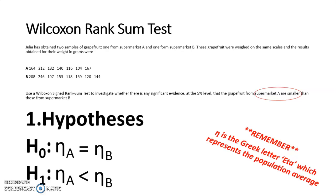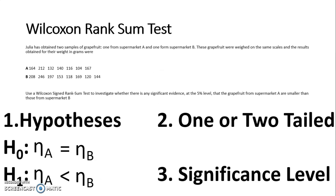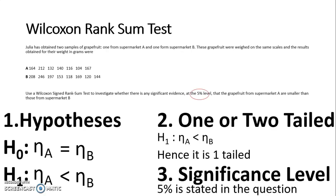So moving on then to steps two and three. Is it one or two tailed? And what is the significance level? So deciding if it's one or two tailed depends on your alternative hypothesis. For this one, we have eta A is less than eta B. So we're just looking at that lower end and it is one tailed. The significance level is stated in the question 5%. But remember, we should use 5% if it isn't stated.